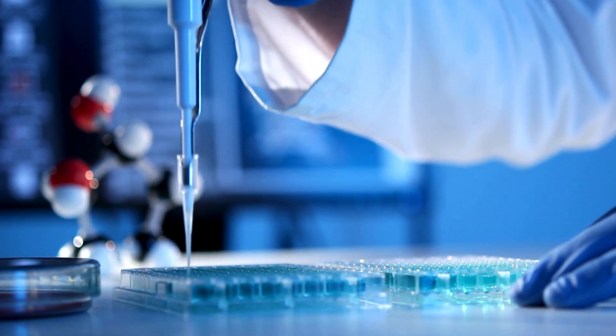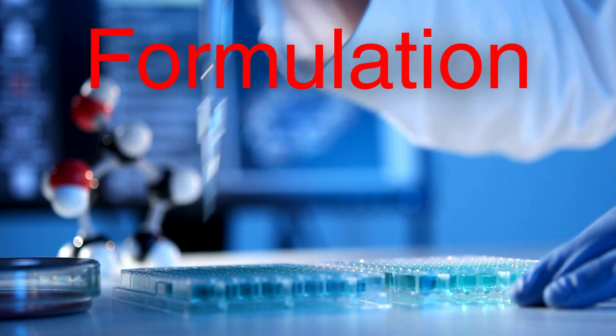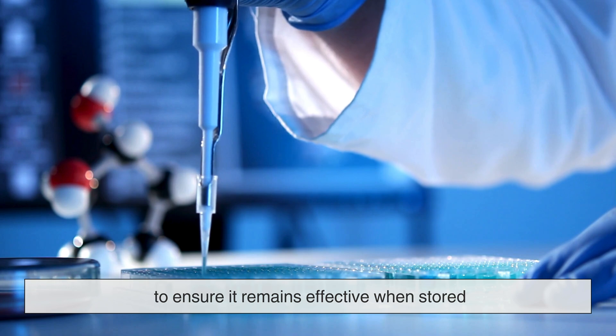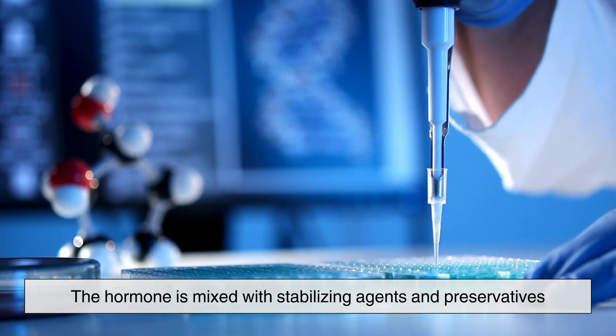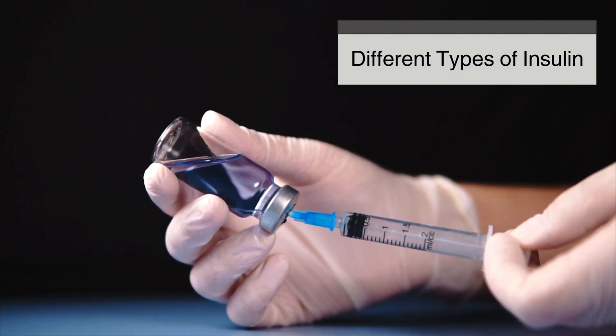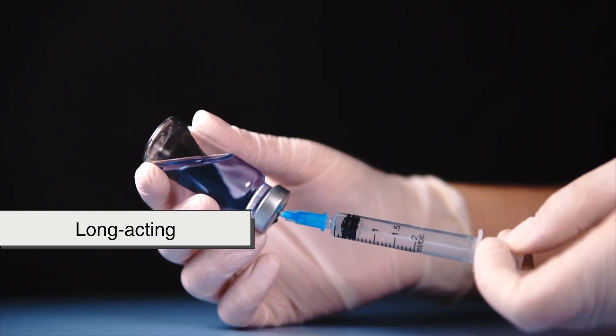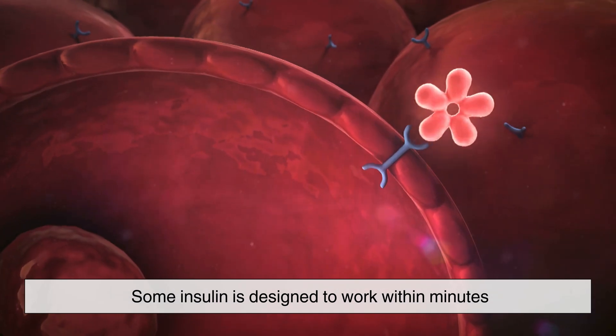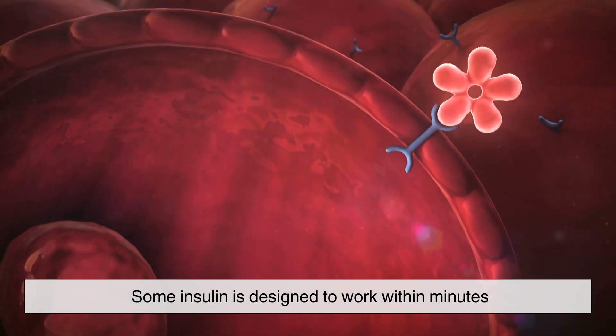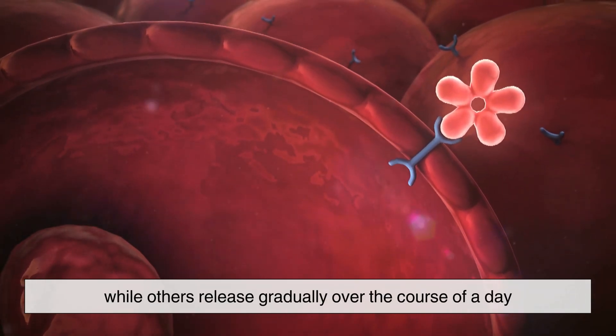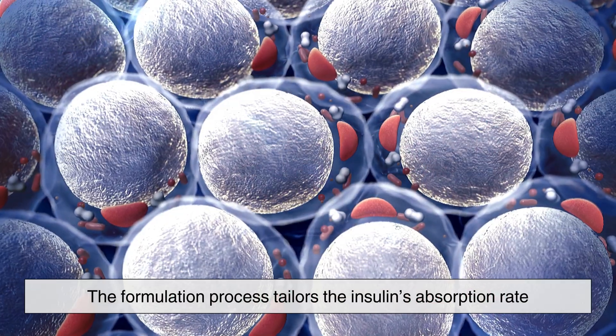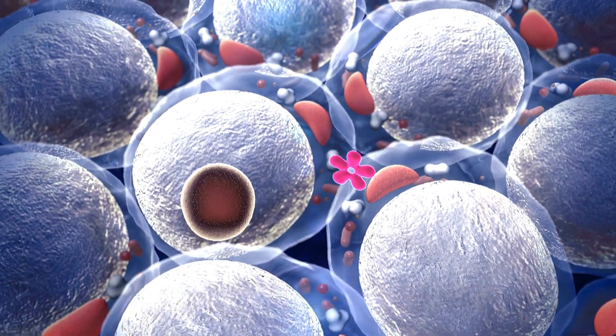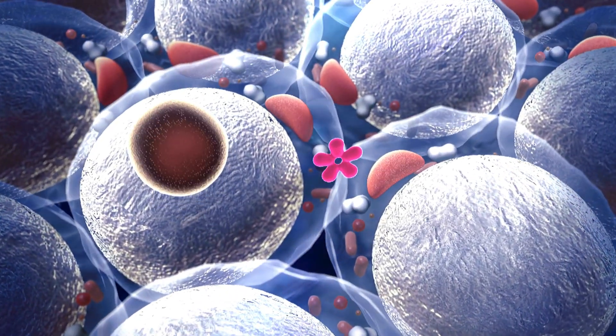With the insulin fully refined, the final step is formulation. At this stage, the hormone is mixed with stabilizing agents and preservatives to ensure it remains effective when stored. Different types of insulin, such as rapid-acting, long-acting, and intermediate-acting require specific formulations. Some insulin is designed to work within minutes, while others release gradually over the course of a day. The formulation process tailors the insulin's absorption rate to meet the needs of different patients, making it a crucial part of its overall efficacy.